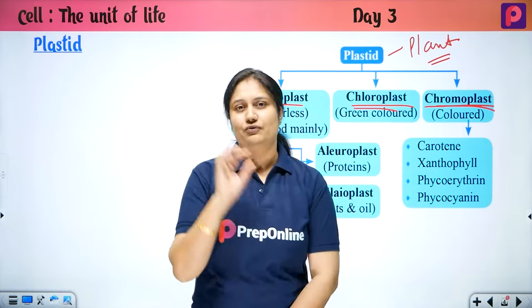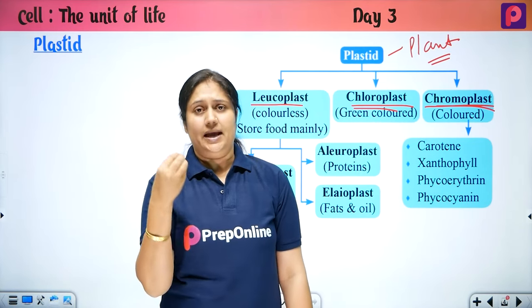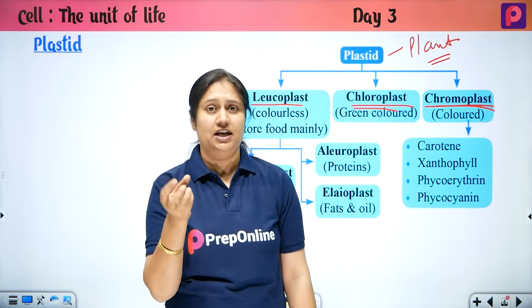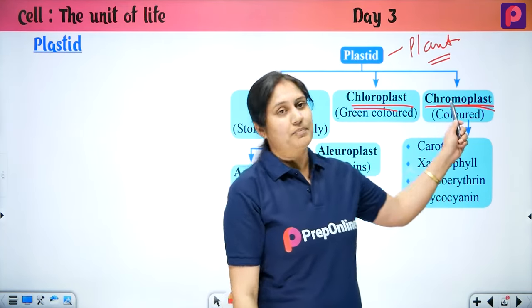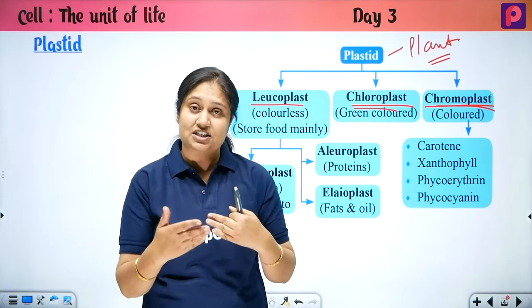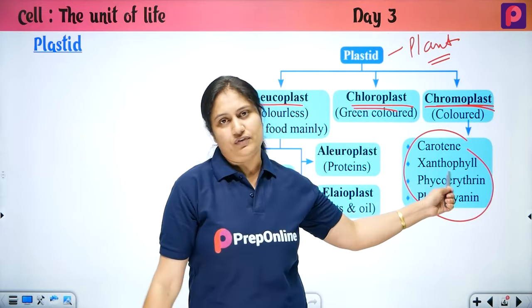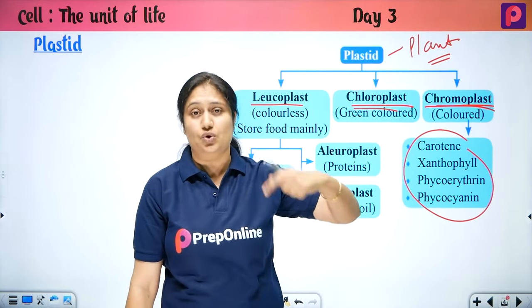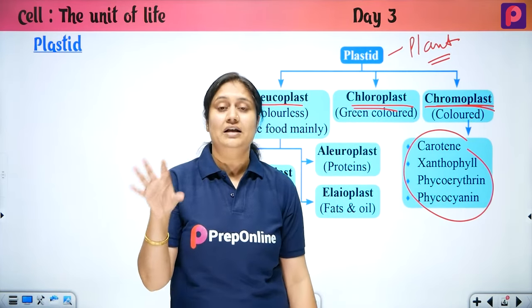What is Chromoplast? These are plastids that show colors. For example, consider a chili — when it is young, it is green, but when it ripens, it becomes red. That color is due to the presence of Chromoplast. The color shows up because of pigments present in them — such as carotene, xanthophyll, phycocyanin, and erythrin. Note that the anthocyanin pigment is present directly in the cytoplasm.